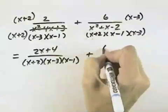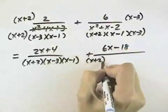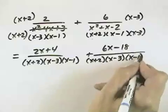Multiplying the second one, we get 6x minus 18 over that same common denominator of x plus 2, x minus 3, times x minus 1.